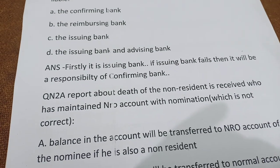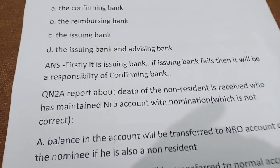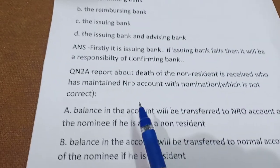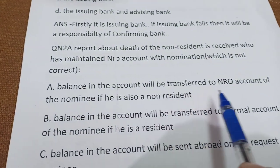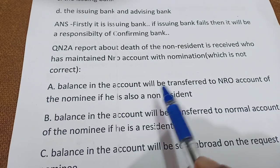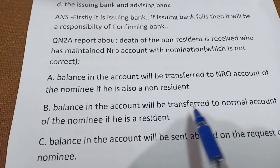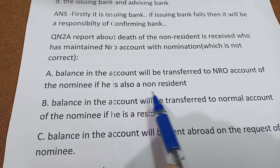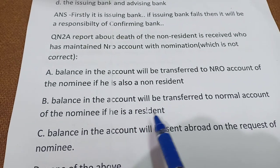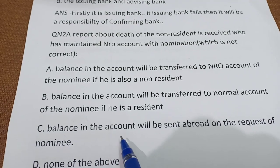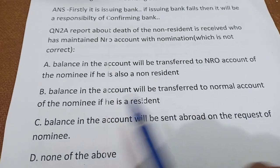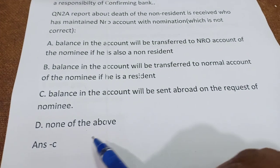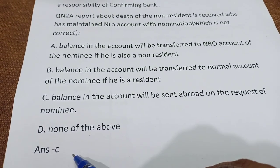Next question: a report about the death of a non-resident is received, who has maintained an NRO account with nomination. Which of the following is correct? Options: A) balance will be transferred to the NRO account of the nominee if he is also a non-resident; B) balance will be transferred to the normal account of the nominee if he is a resident; C) balance will be sent abroad on the request of the nominee; D) none of the above. Our answer is option C.